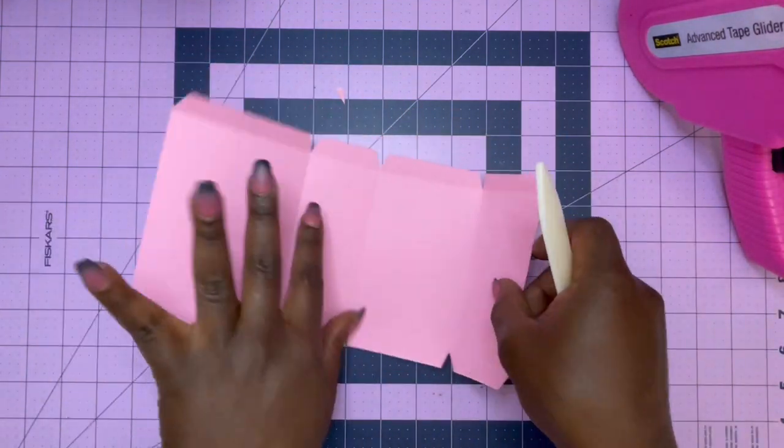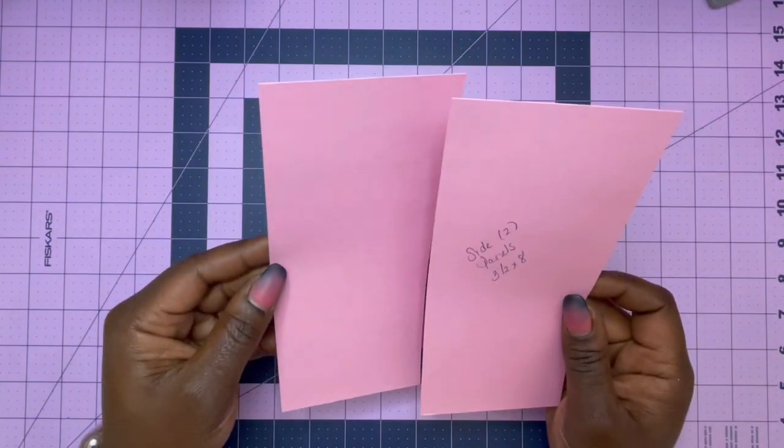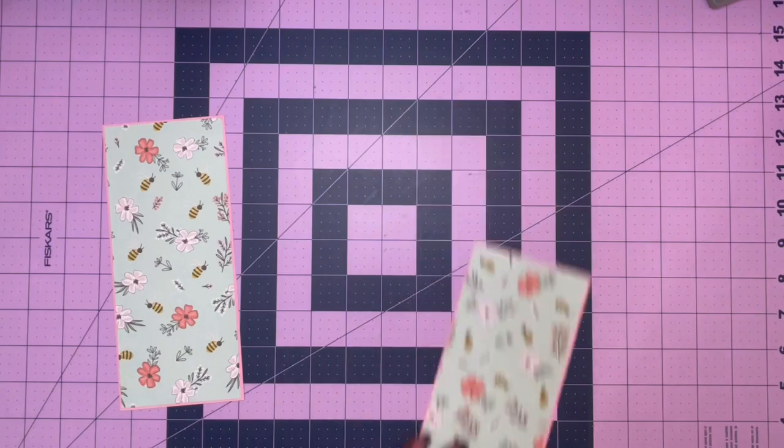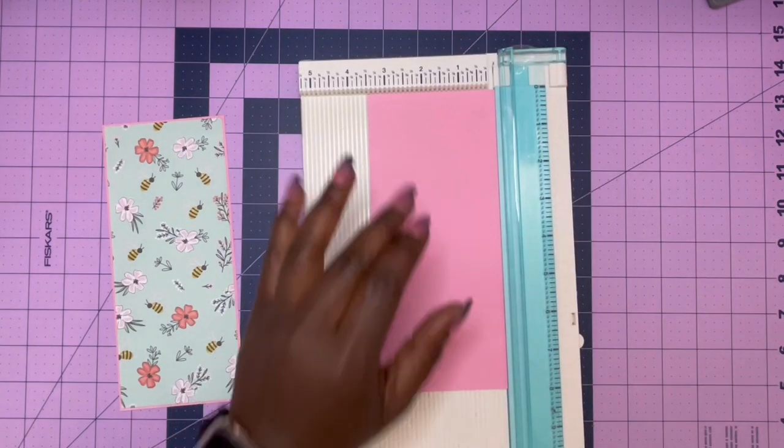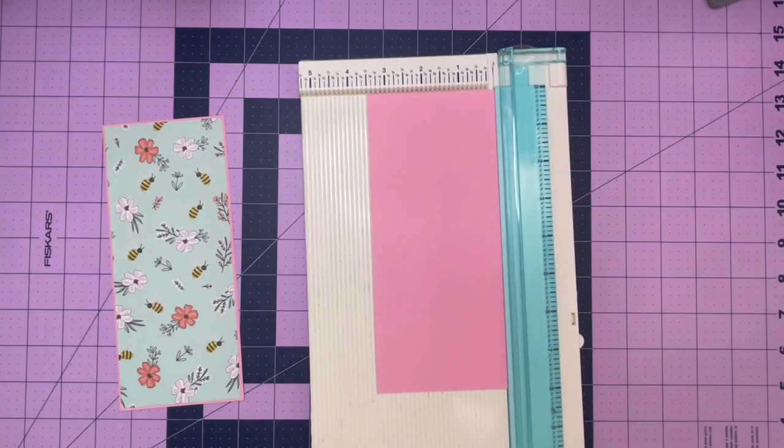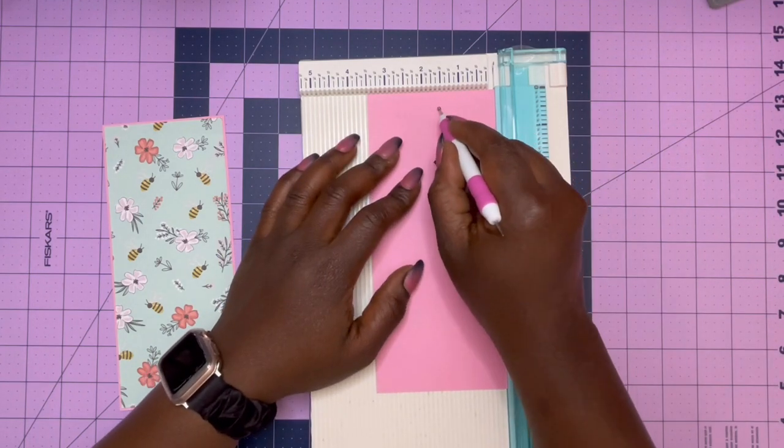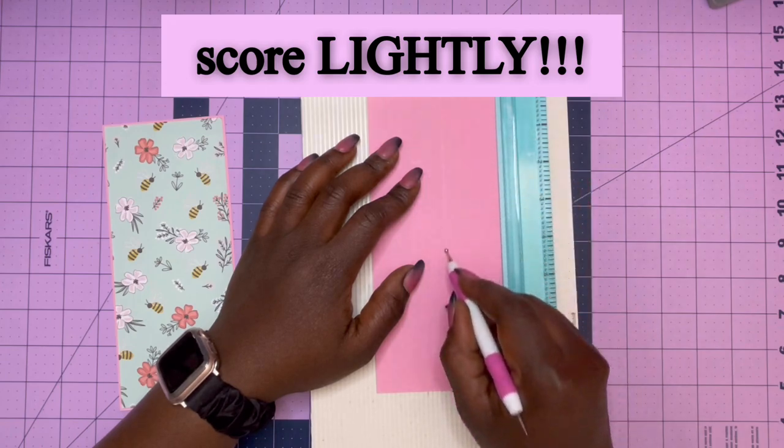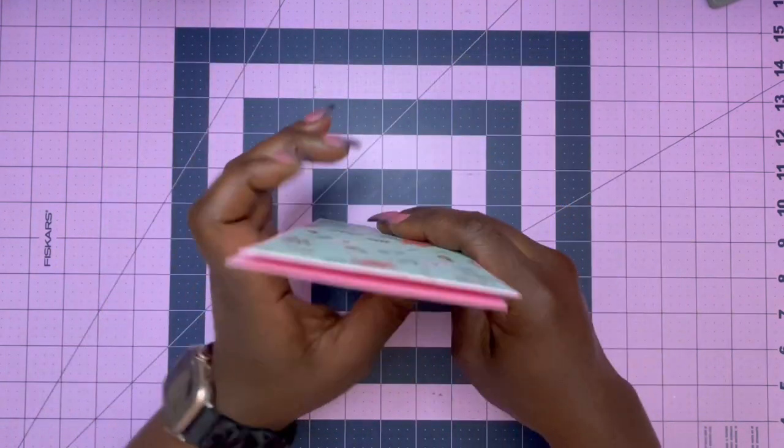Speaking of that, that is what we are going to do next. Again, make sure you mat your pieces before you do anything else. Now I'm going to grab my scoreboard and make a mark at the one and a half inch score, and then on the other one, on the opposite end, I'm going to mark it at two inches.